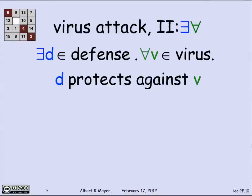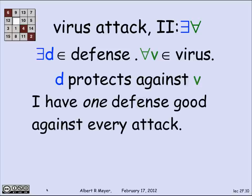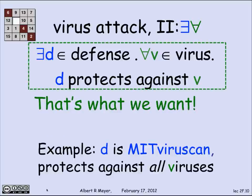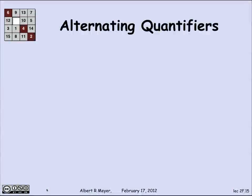Let's reverse them. Suppose I tell you that there's one defense that's good for all viruses. There is a defense such that for every virus, d protects against v. For example, if d is MIT virus scan, then it would be wonderful if it was true that d protects against all viruses. There's one defense good against every attack. That's what we want, because it's a lot cheaper.